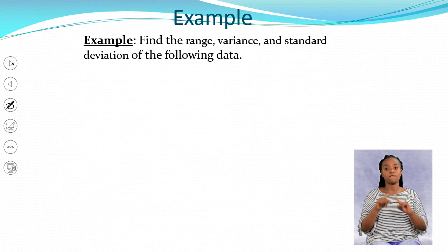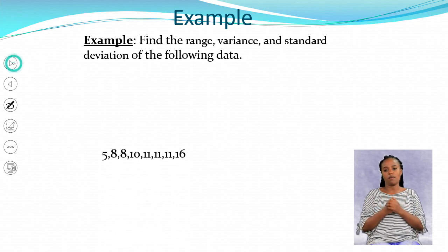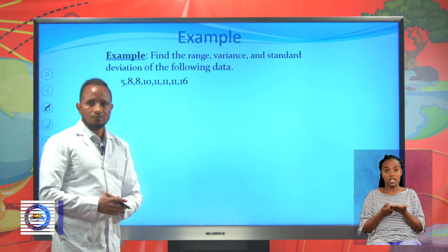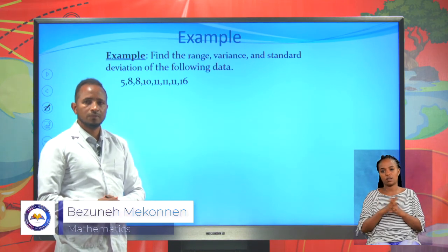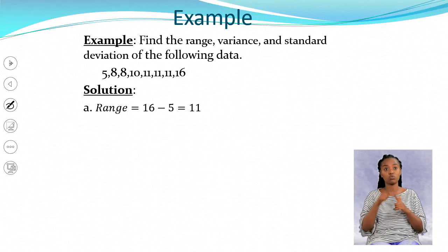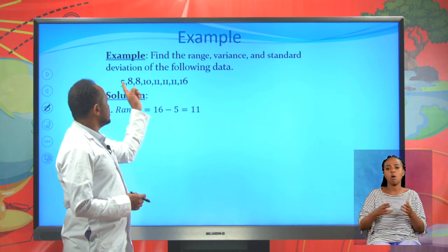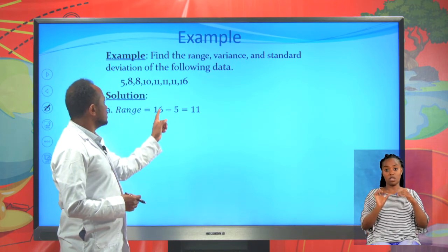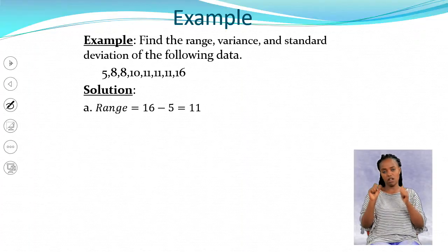Now let's see an example. Let's find the range, variance, and standard deviation for the following set of data: 5, 8, 8, 10, 11, 11, 11, and 16. To find the range, simply take the difference between maximum and minimum value. The maximum is 16, the minimum is 5. Their difference gives you 11.